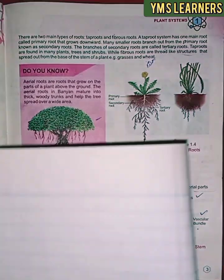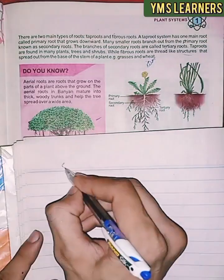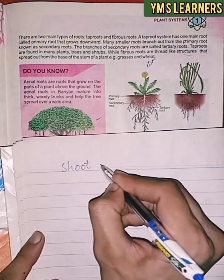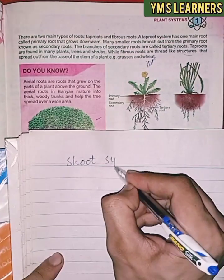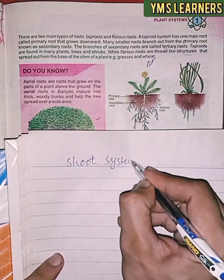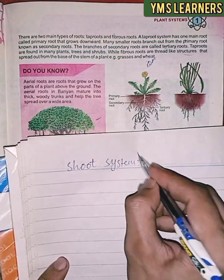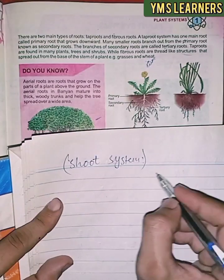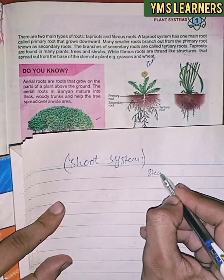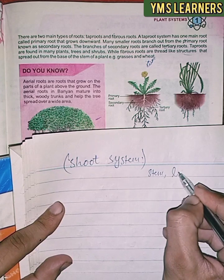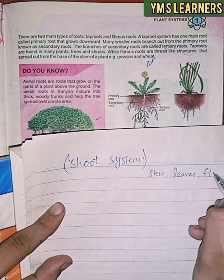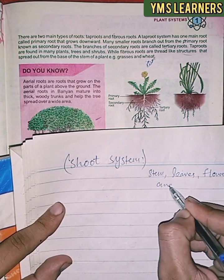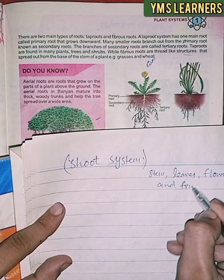This is the shoot system. The shoot system includes leaves, flowers, stem, and fruits.